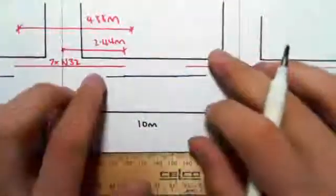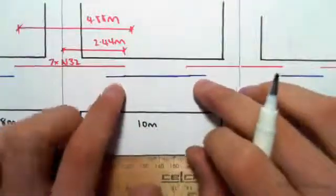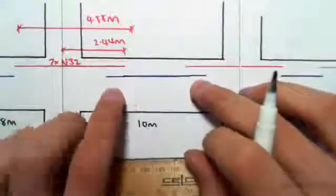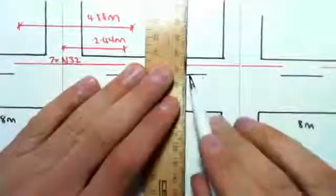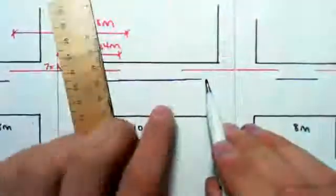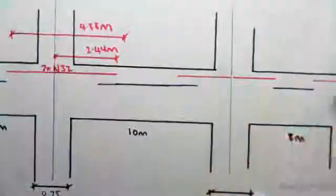But the thing we need to find from the code is this splice length, so this additional length from there to there. That's the splice length. Now we do that by looking at section 13.2.2 of the code.